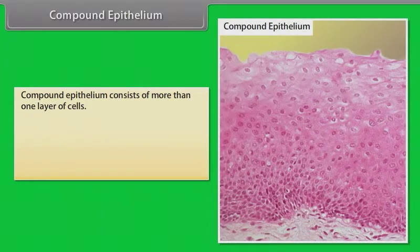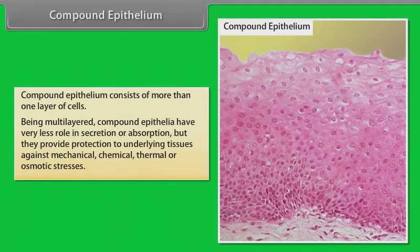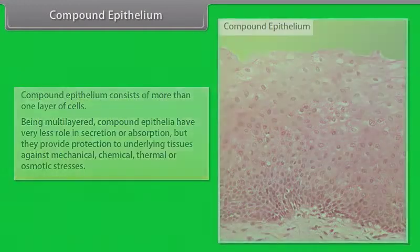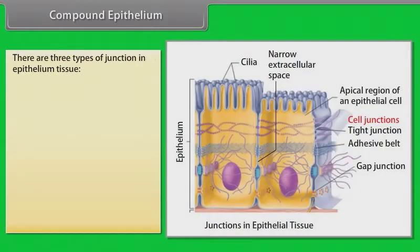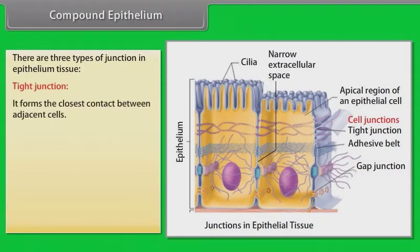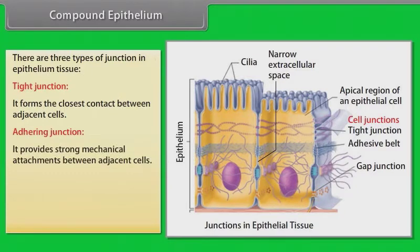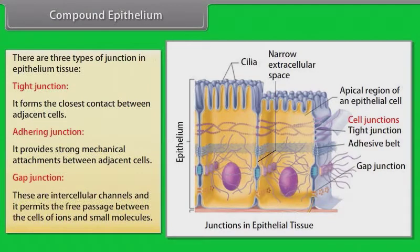Compound epithelium consists of more than one layer of cells. Being multi-layered, compound epithelia have very little role in secretion or absorption, but they provide protection to underlying tissues against mechanical, chemical, thermal, or osmotic stresses. There are three types of junctions in epithelial tissue: tight junction, which forms the closest contact between adjacent cells; adhering junction, which provides strong mechanical attachments between adjacent cells; and gap junction, which are intercellular channels that permit the free passage of ions and small molecules between cells.